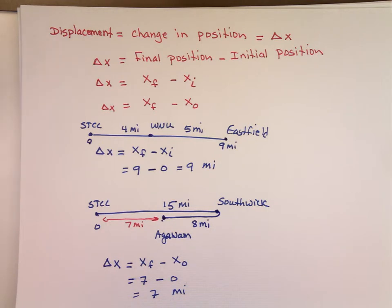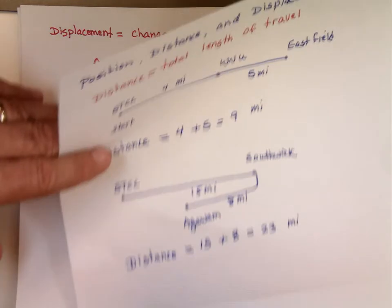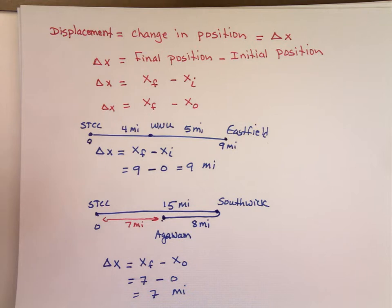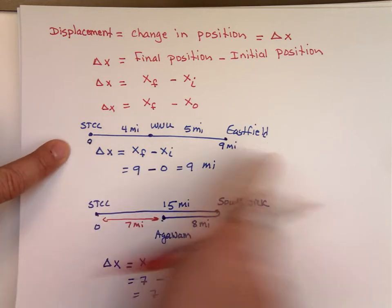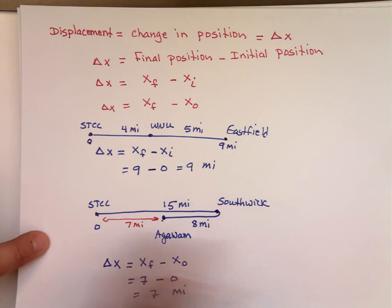So notice your displacement here, it's not the same as distance. People will use that interchangeably. They go, displacement, distance, always the same thing. Well, they're not really the same. The only time they're the same is when you travel like this, straight line. But when you start going back and forth, the two things are not the same.